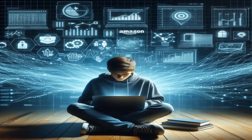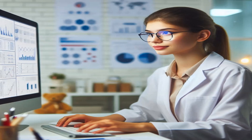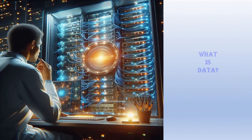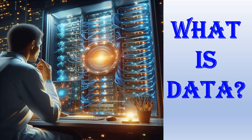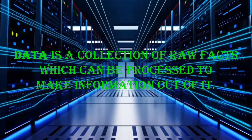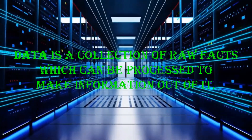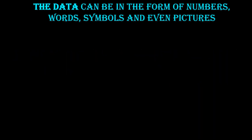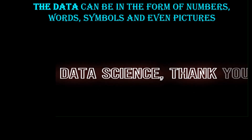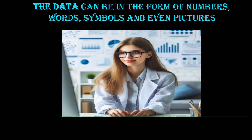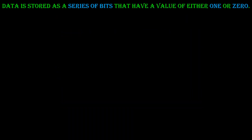In today's tech era, we spend a lot of time online, generating tons of data. What is data? Data is a collection of raw facts which can be processed to make information out of it. The data can be in the form of numbers, words, symbols, or even pictures. Internally in computers, data is stored as a series of bits that have a value of either 1 or 0.